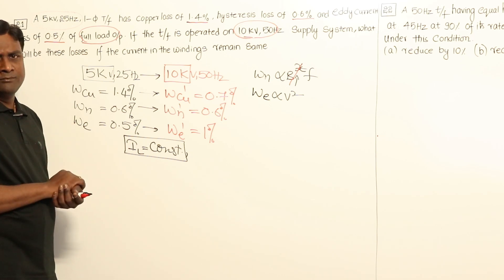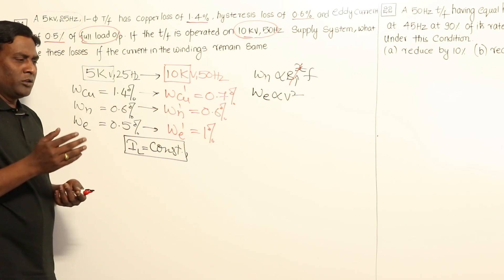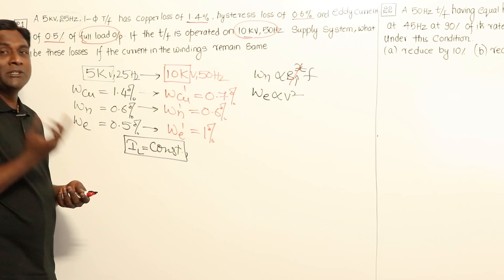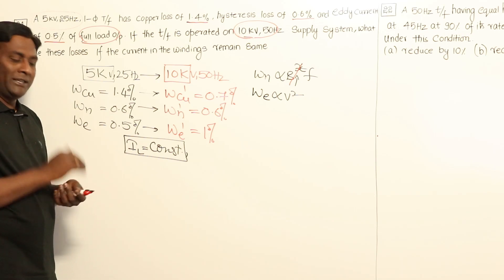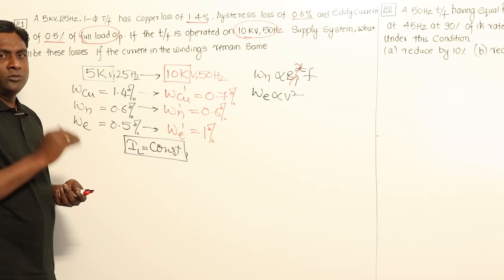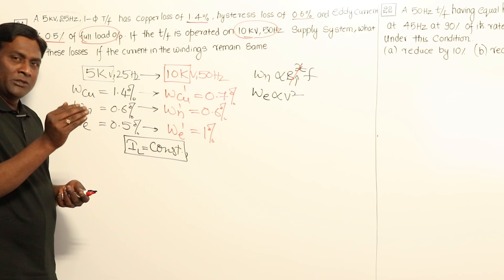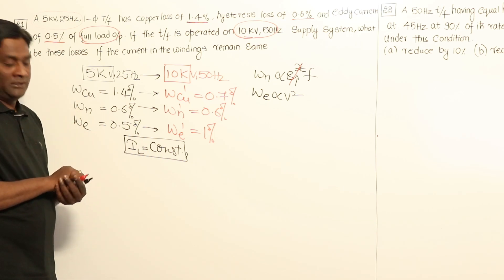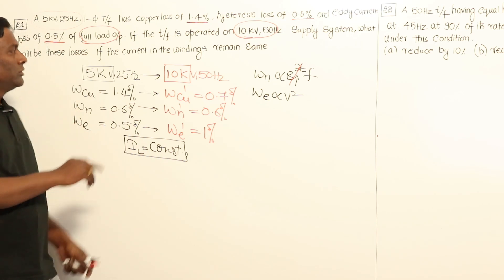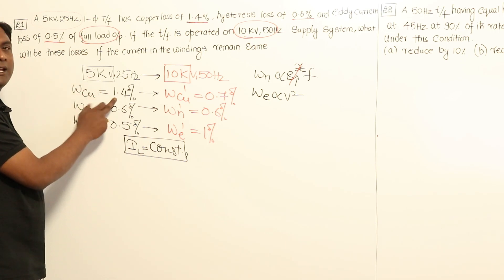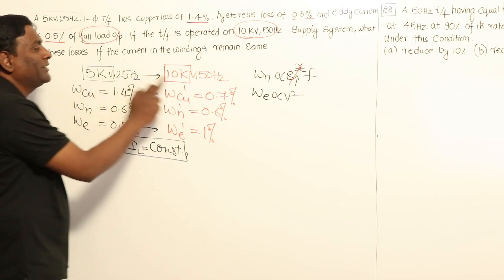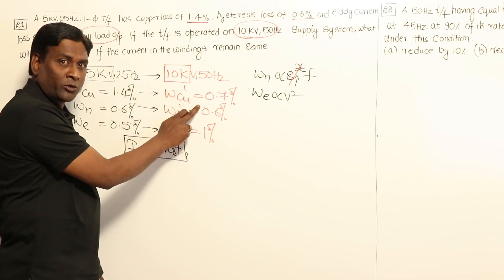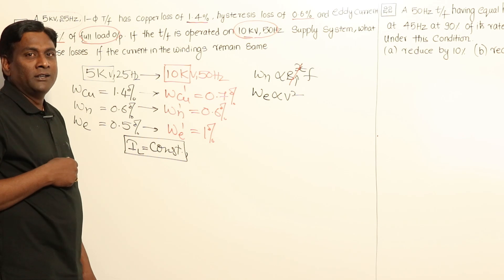Let me explain with an analogy. If today my income is 100 rupees and I spend 20 rupees, that's 20% of my income wasted. Tomorrow if my income doubles to 200 rupees and I still spend only 20 rupees, then it becomes just 10% of my income. The actual spend is the same but the percentage is halved because the base doubled.